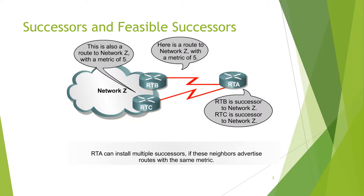There is also a route to network Z with a metric of 10. RTC and RTB are both successors to network Z. RTA can install multiple successors in the routing table whenever a router has routes with the same metric.